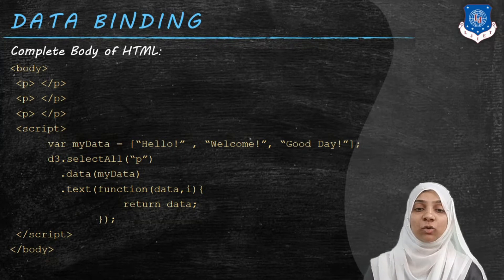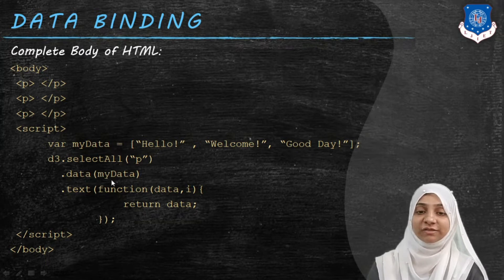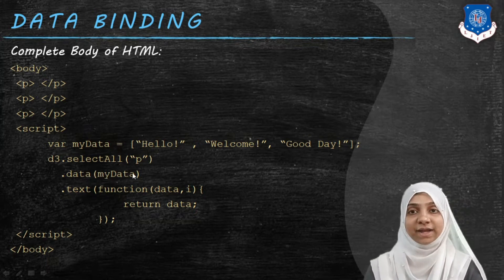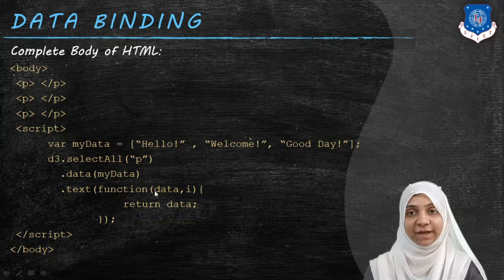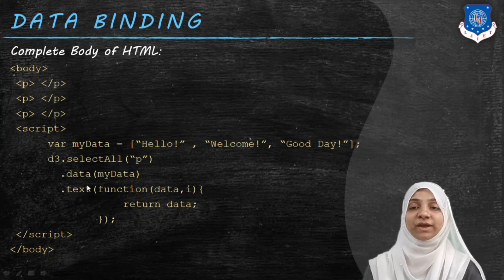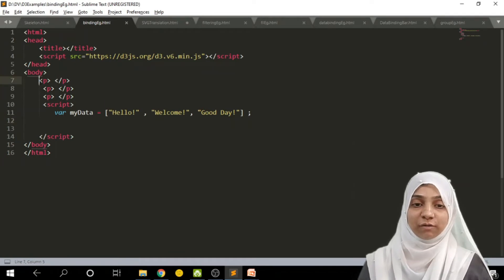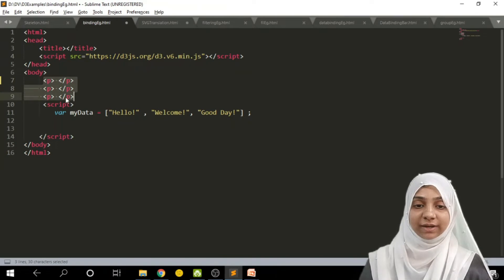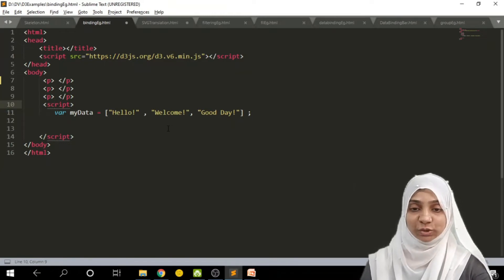The complete HTML code looks like this: within the body we have three empty p tags; within the script we have one variable myData which is an array of three elements — 'hello', 'welcome', 'good day'. We first select all p tags, bind the data using the data method to myData, and change the text of each p tag with the text function returning d itself. This is how simple data binding works.